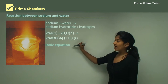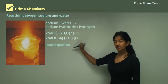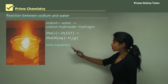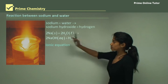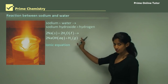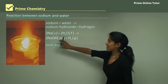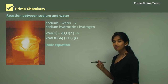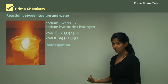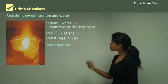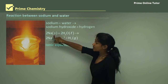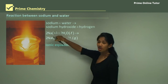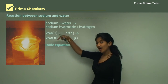Now we're going to write an ionic equation — you might be asked to write this in your exam. When writing an ionic equation you first have to identify which compounds have ionic bonds. Ionic bonds are between metals and non-metals. Here sodium as a standalone metal has no ionic bonds because it's not joined to any other element.